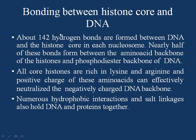The bonding between the histone core and DNA involves about 142 hydrogen bonds between the DNA and the histone core in each nucleosome. Nearly half of these bonds are formed between the amino acid backbone of the histone and the phosphodiester backbone of the DNA. All core histone proteins are rich in lysine and arginine, which are basic amino acids, giving them a positive charge.